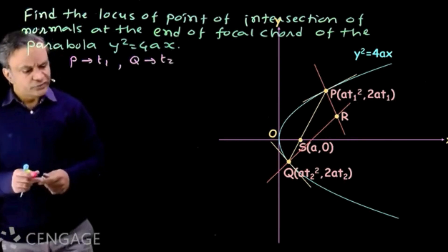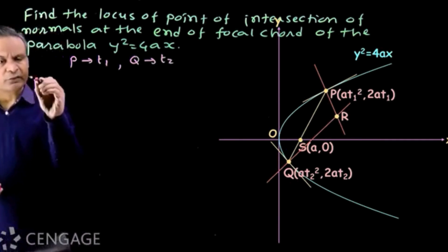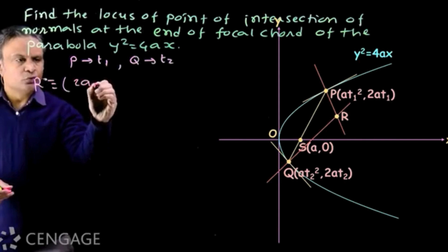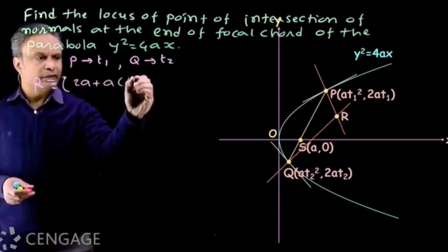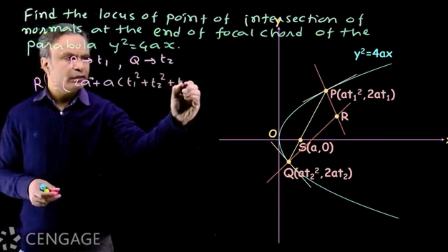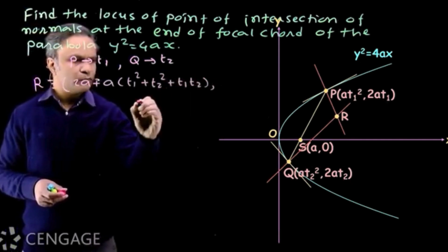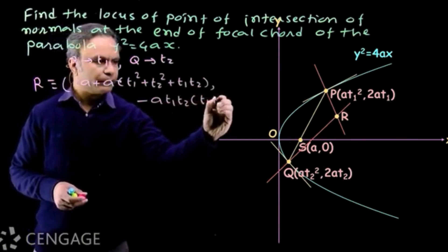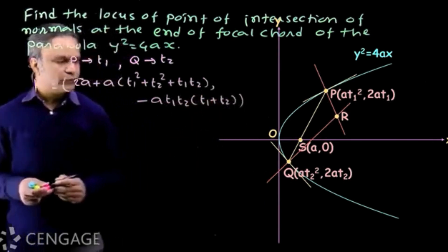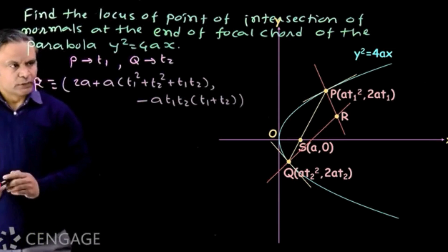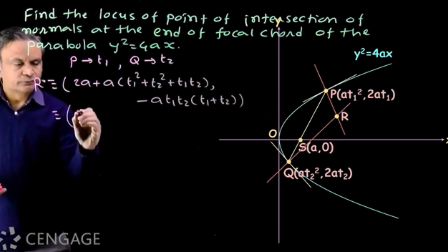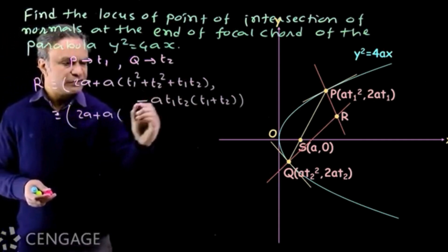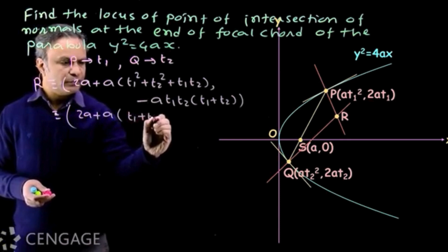Now what will be coordinates of point R? We have standard coordinates: 2a plus a multiply by t1 squared plus t2 squared plus t1 t2, comma minus a t1 t2 multiply by t1 plus t2. We can write this way: 2a plus a inside bracket, this expression is t1 plus t2 whole squared minus t1 t2.